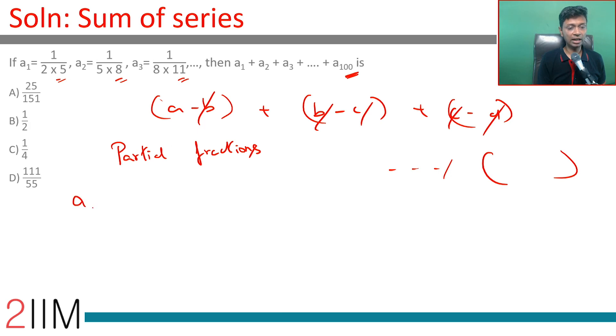I am going to define A_N as 1 by 3N minus 1 into 3N plus 2. This is A_N. First term is 1 by 2 into 5.